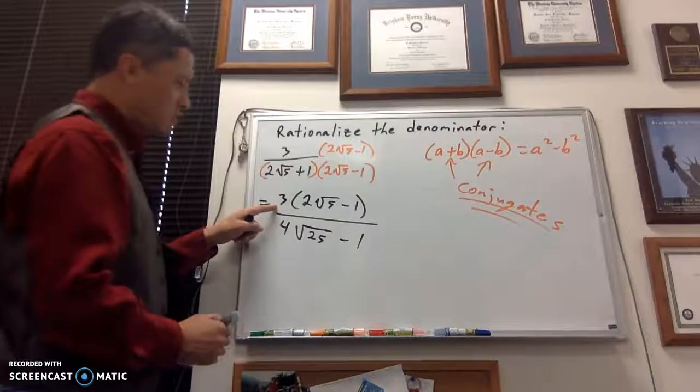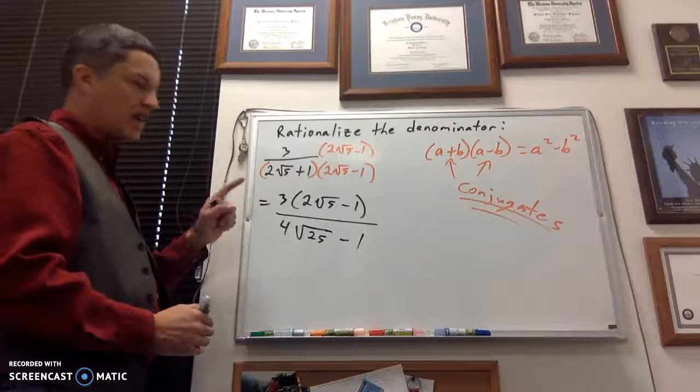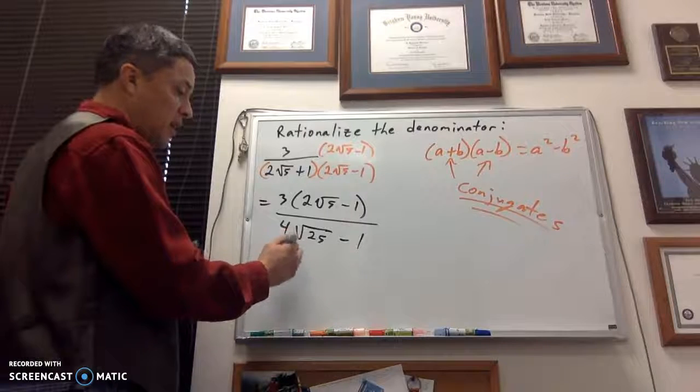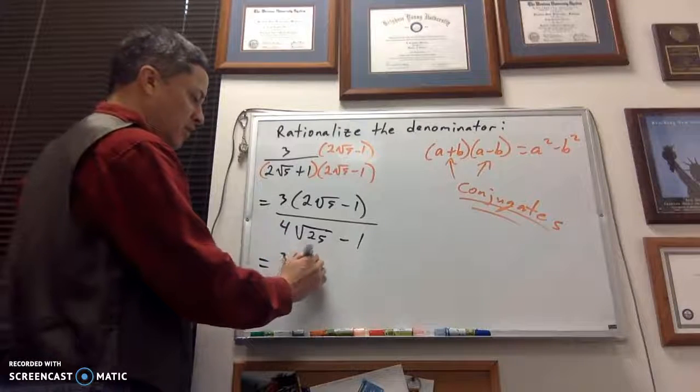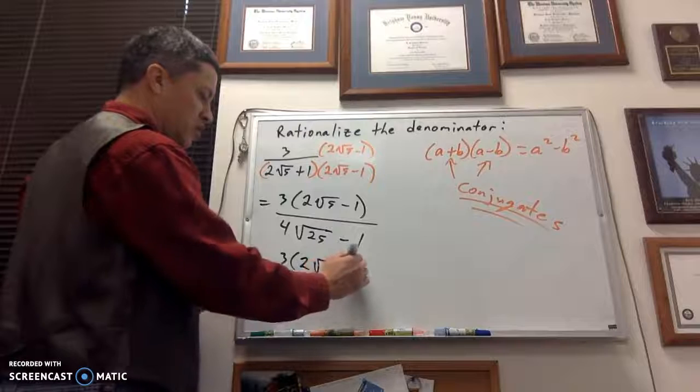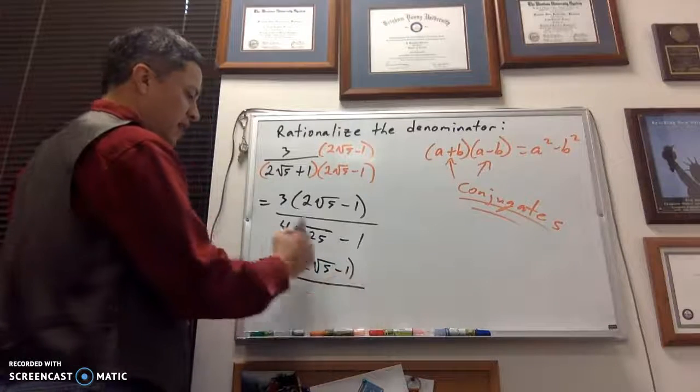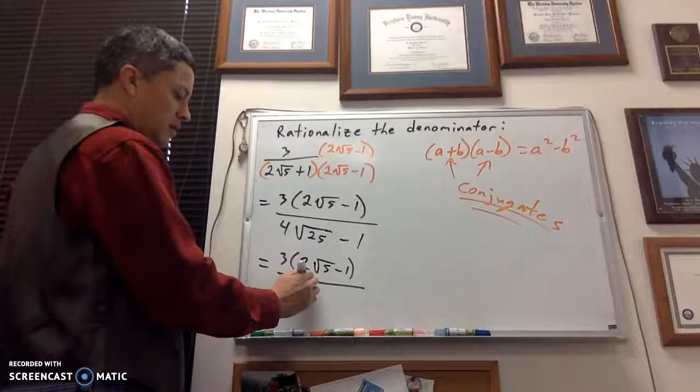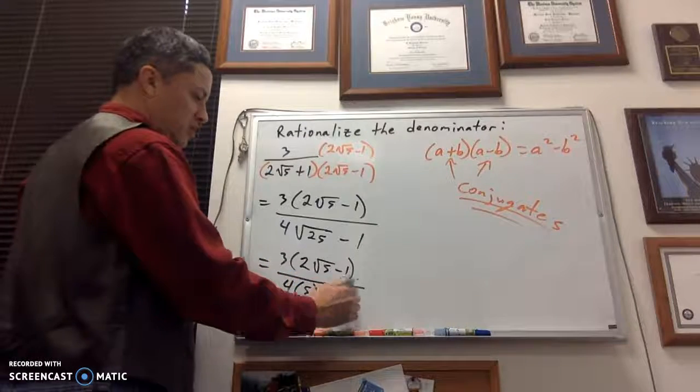Notice I'm not going to distribute this 3 through just yet. It might reduce with something in the denominator. It might not, but I don't want to create extra work for myself, so let me just rewrite the numerator. And then the denominator, that's 4 times 5, and that's the 1 there.